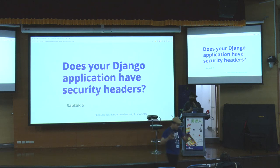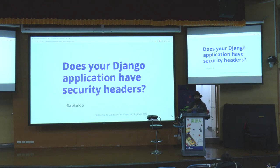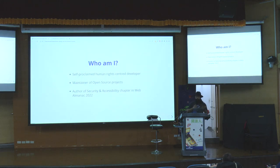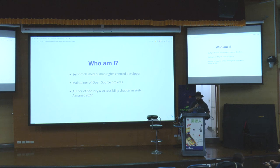Hello everyone. So in the slide I also have a link if you want to follow along or check it later. Today we are going to talk about: does your Django application have security headers? I am a self-proclaimed human rights-centered developer, which means I work more on security, accessibility, and privacy. I'm also a maintainer and contributor to different open source projects like OnionShare, A11y Project, and Wagtail. I also authored the security and accessibility chapter in Web Almanac 2022.